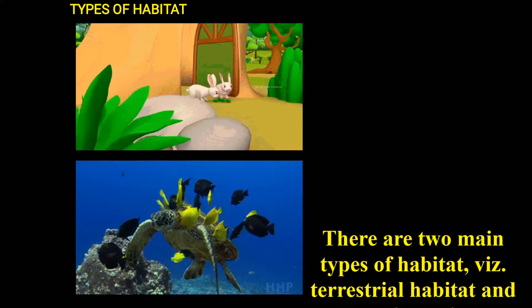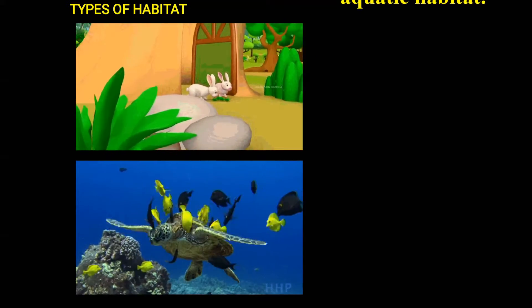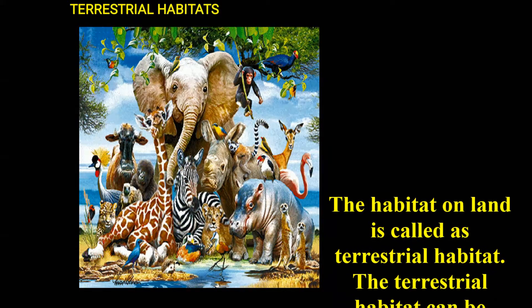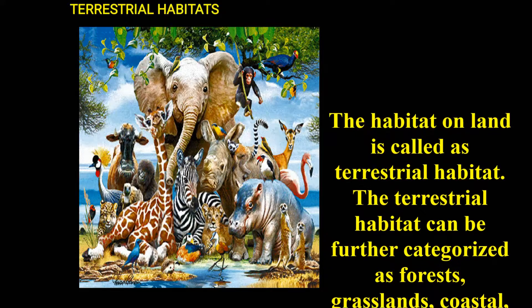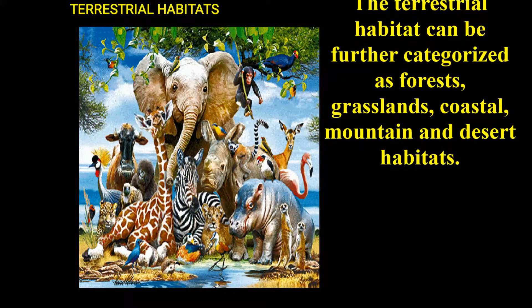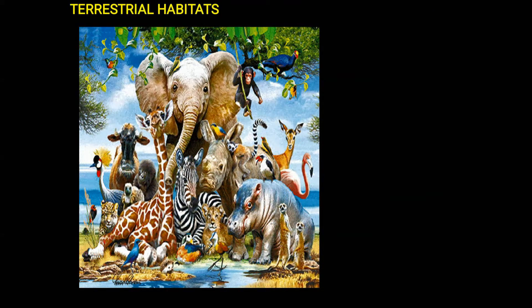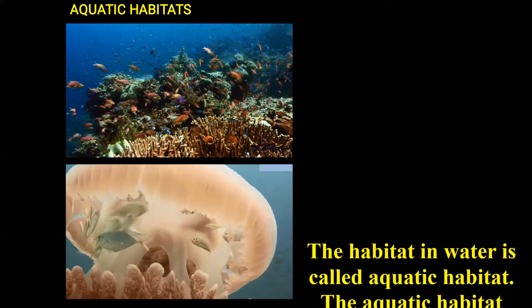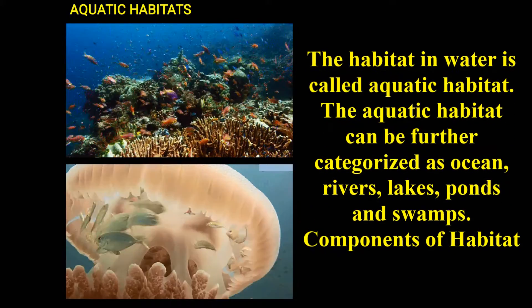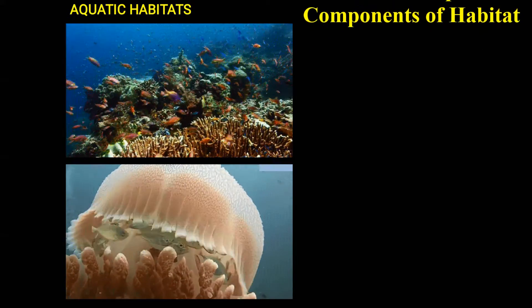Habitats are mainly divided into two groups: terrestrial habitat and aquatic habitat. The habitat on land is called terrestrial habitat, which can be further categorized into forest, grassland, coastal, mountain and desert habitats. The habitat in water is called aquatic habitat, which can be further categorized into oceans, rivers, lakes, ponds and swamps.